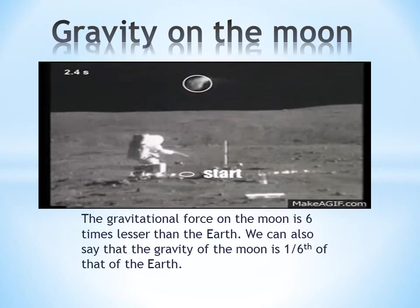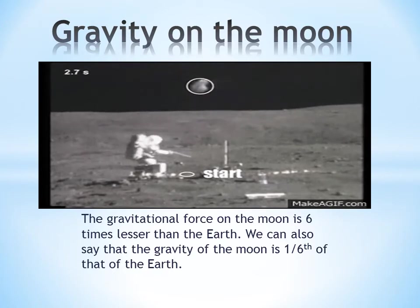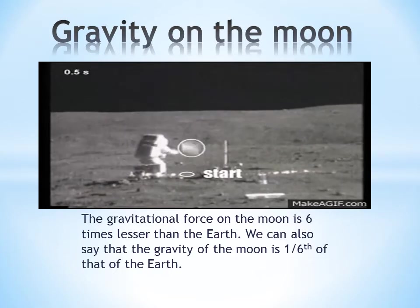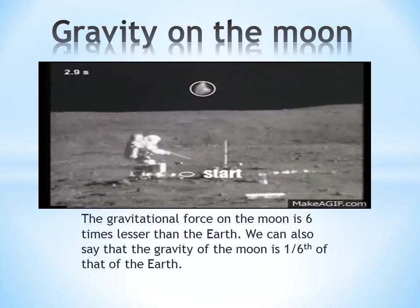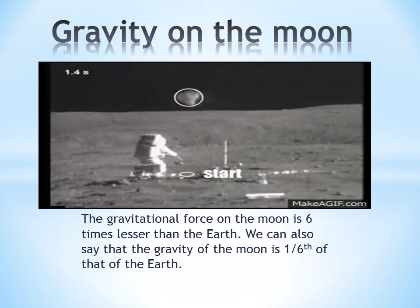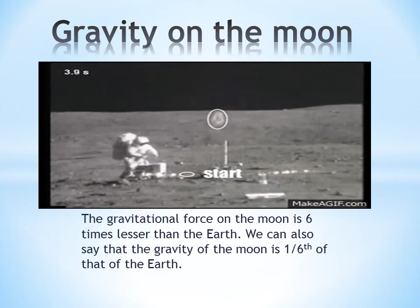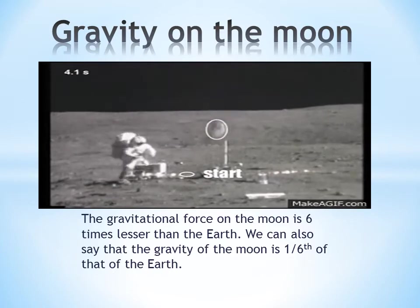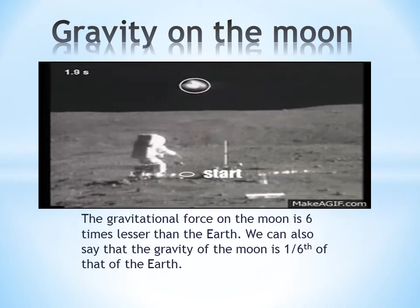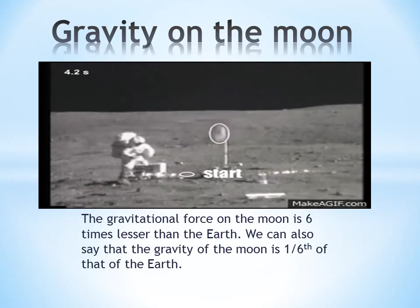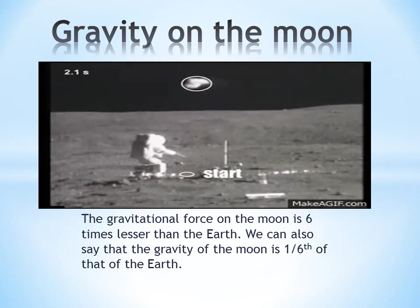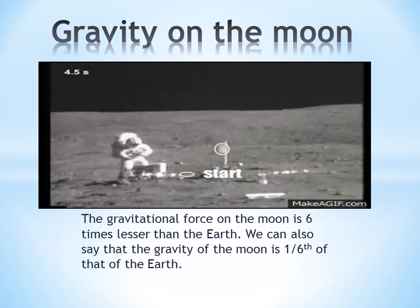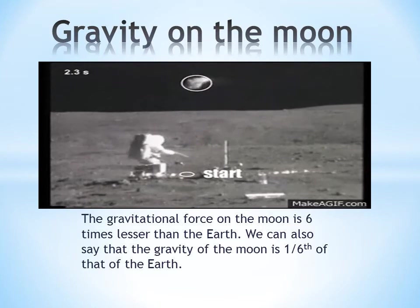The gravity on the moon is weaker compared to Earth. Earth's gravity is six times stronger than the moon's. You would write that the moon has one-sixth the gravity of Earth — it is six times lesser than Earth. On the moon, a person would feel six times lighter. And if you were to jump on the moon, you should be able to jump six times higher, since the gravity is six times weaker.